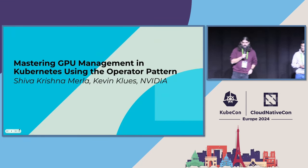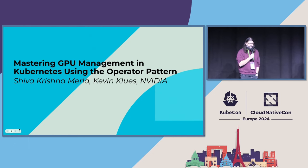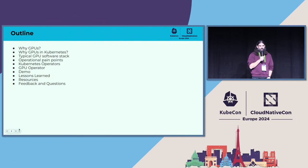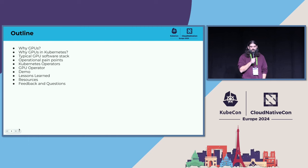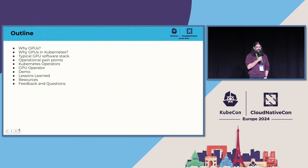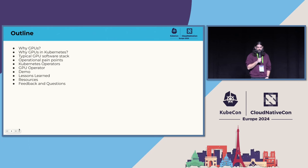My name is Kevin Clues, on the same team as Shiva at NVIDIA. The way I always pitch our team is that we do everything necessary to enable GPU support in containers in Kubernetes, and then we build all the tooling around that to make using GPUs in this environment easier. The operator is our way to package all these things together and make it that much easier to take advantage of all of these things on Kubernetes.